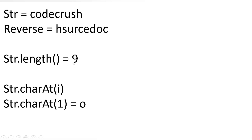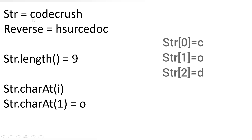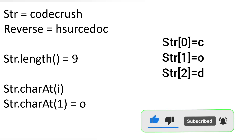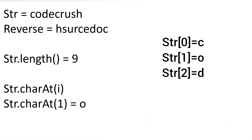One thing you need to remember: indexing of a string starts from zero, so the first character is stored at position zero. But the length starts from one — so if you count the positions, length is always starting from one but the indexing starts from zero.